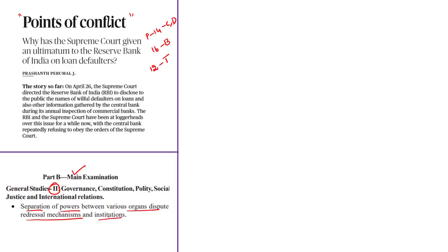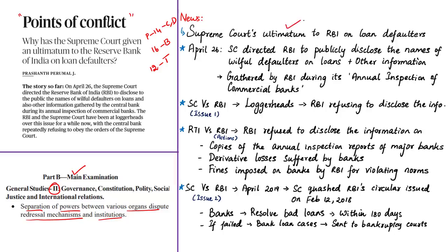The article discusses the Supreme Court's ultimatum to RBI on loan defaulters. On April 26, the Supreme Court directed RBI to publicly disclose the names of willful defaulters on loans and also other information gathered by the central bank during its annual inspection of commercial banks. The RBI and the Supreme Court have been disputing over this issue for a while. The article also tells that RBI is repeatedly refusing to obey the orders of the Apex Court.